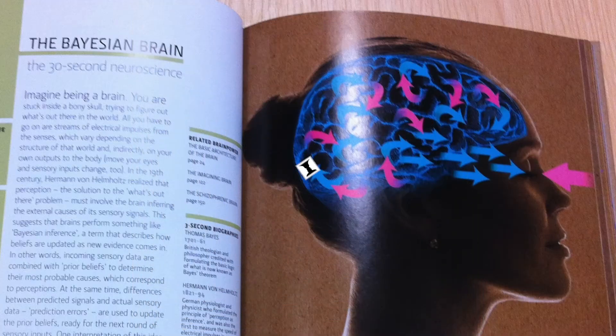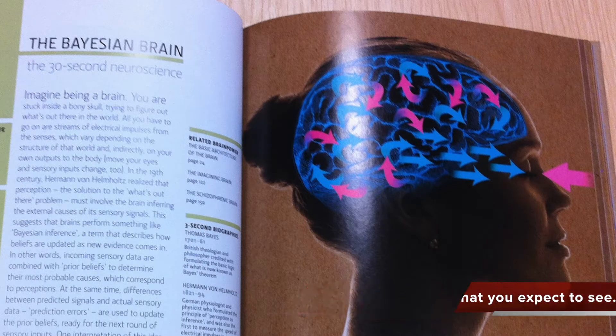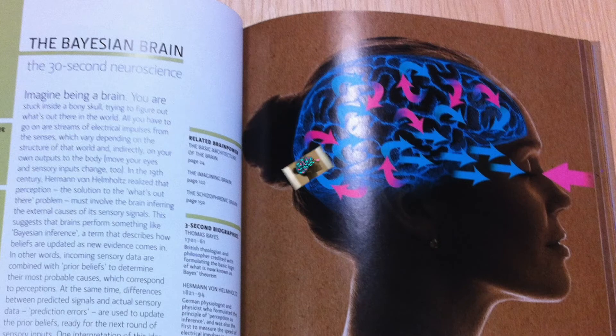Another example of this is the face-vase illusion. For the same sensory data, you can either see this as two white faces looking at each other or as a single black vase. The fact that what you see is largely what you expect to see helps us understand what's been quite mysterious in brain science for a long time.